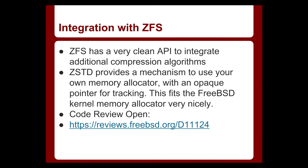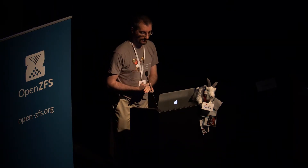I originally started working on this when ZStandard 1.0 came out in the middle of 2016. The very beginning was quite easy. ZFS has a nice clean API — you just add some functions to a table, and it's like: here's the buffer I want to compress, here's the buffer I want you to write the compressed version into, the sizes and whatever. It was very straightforward.